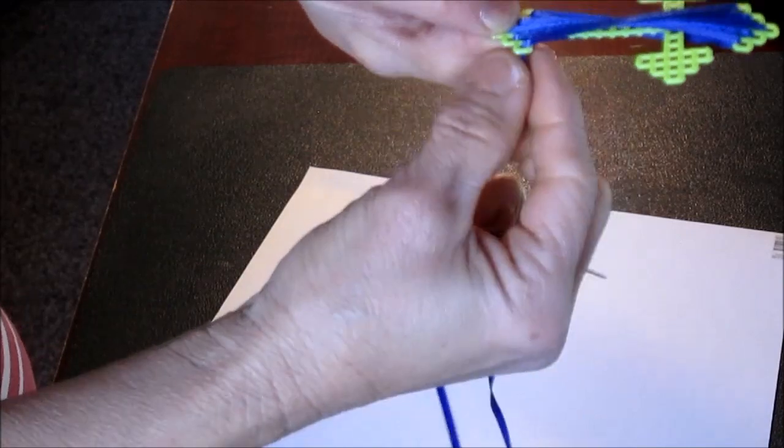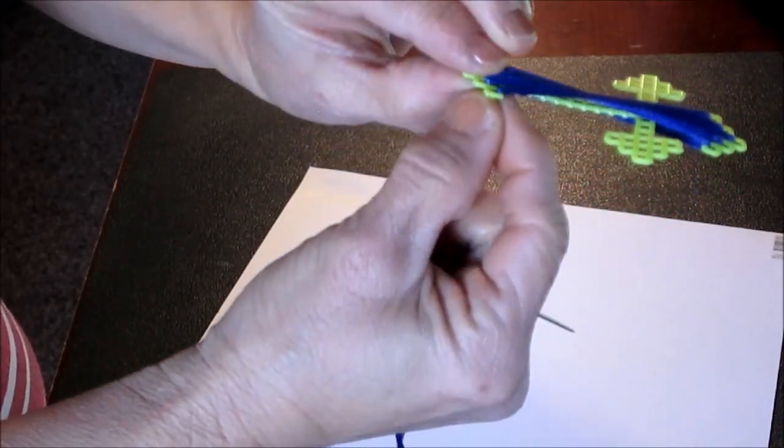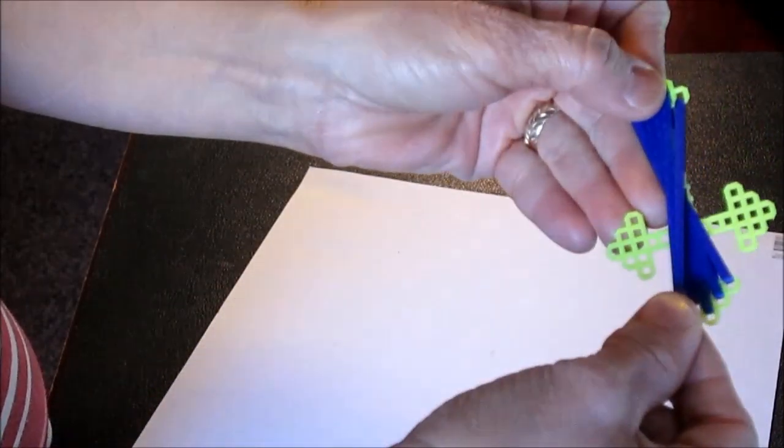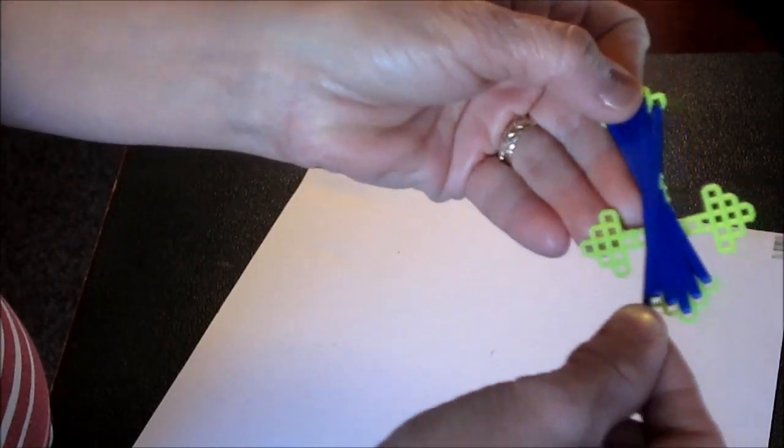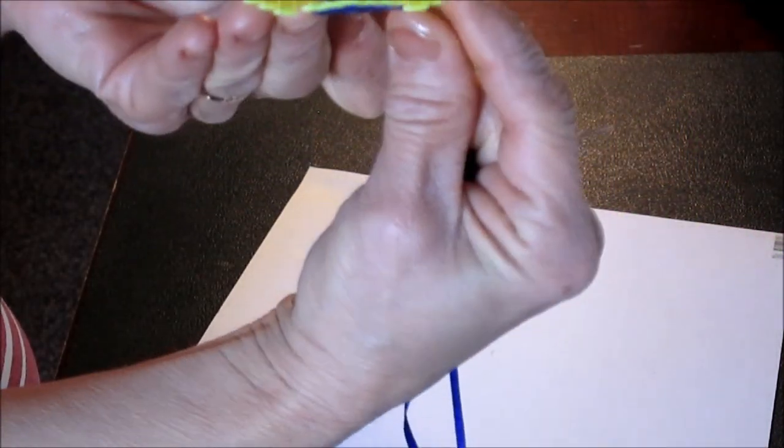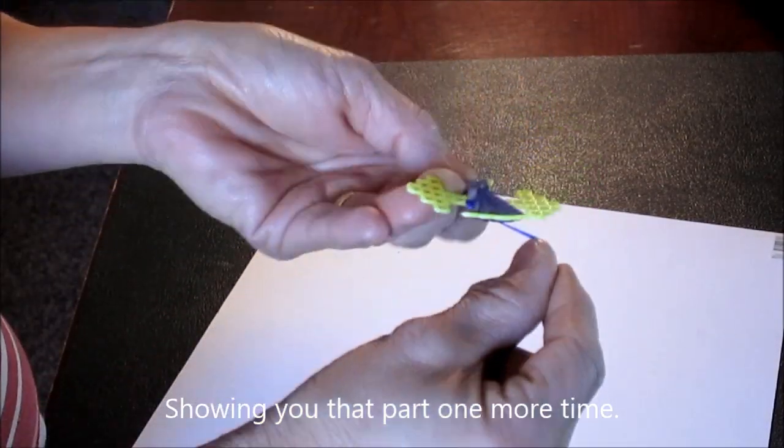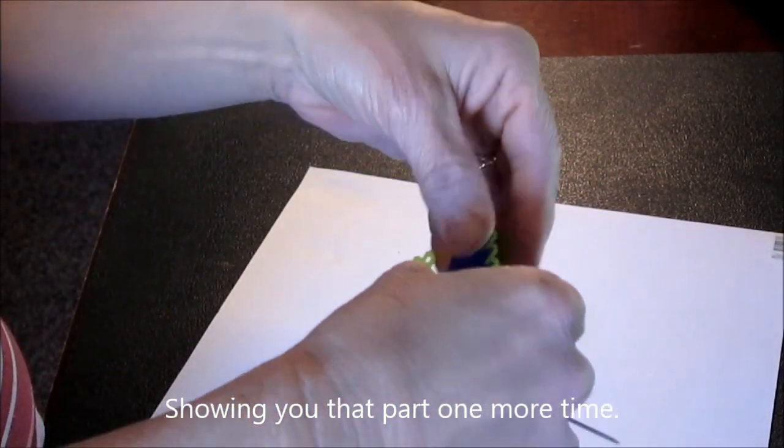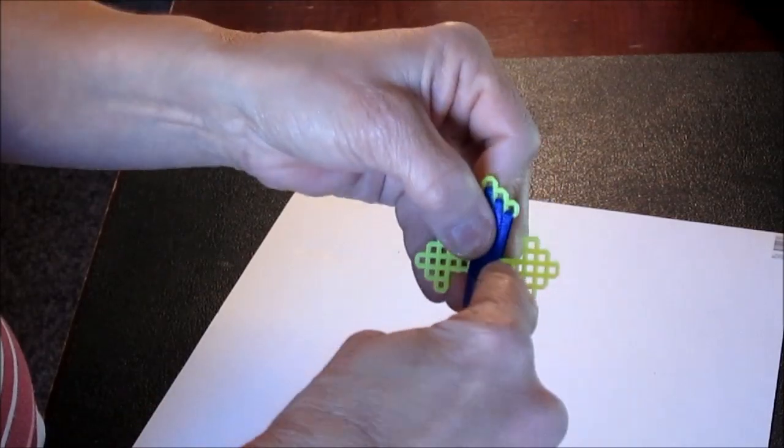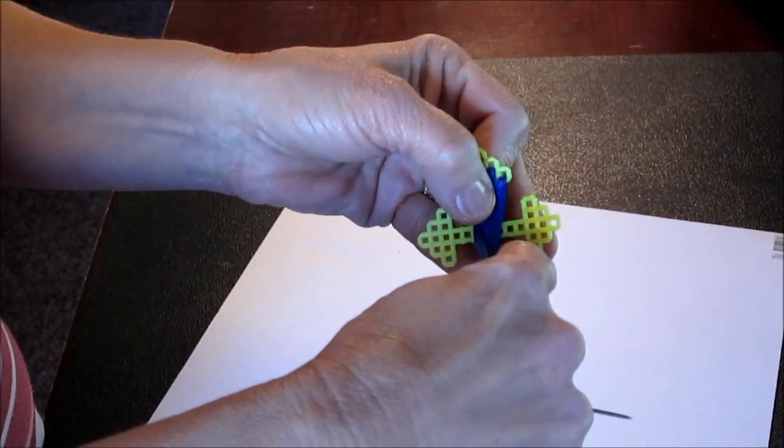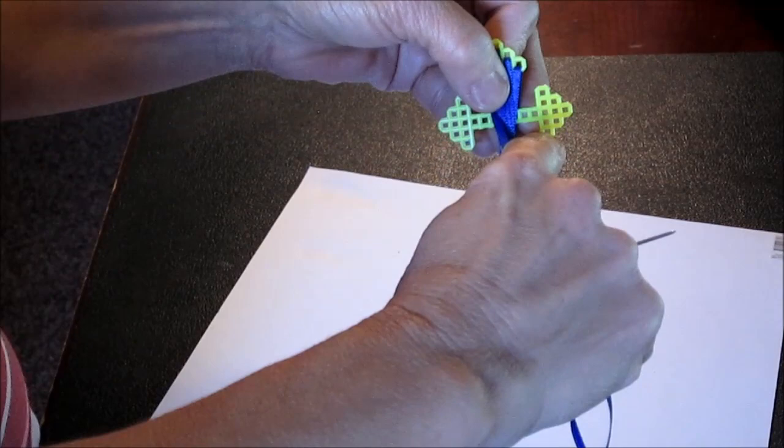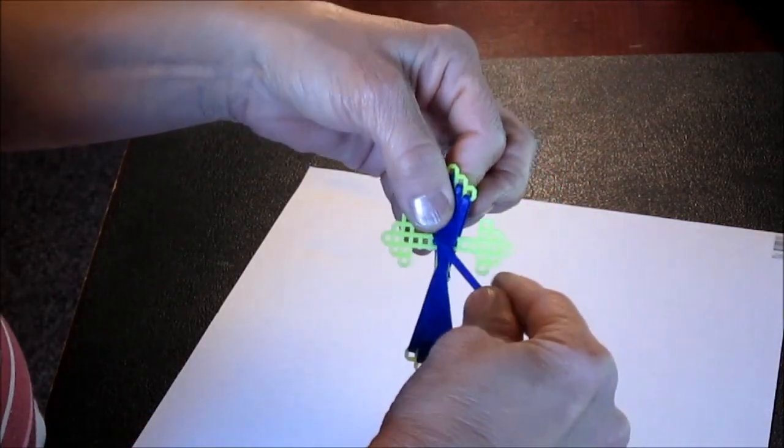Okay this is an important part right here. You're done stitching that last hole there. What you would do is go across like this and flip it over to that corner. I'm gonna flip it over and go to the corner like that and start. Now you'll be on the right hand side on the bottom hole.